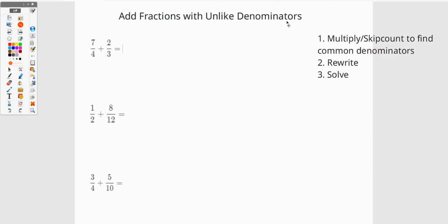Remember our steps for finding common denominators. Step one is to multiply or skip count to find common denominators. Step two is to rewrite the problem. And step three is to solve.